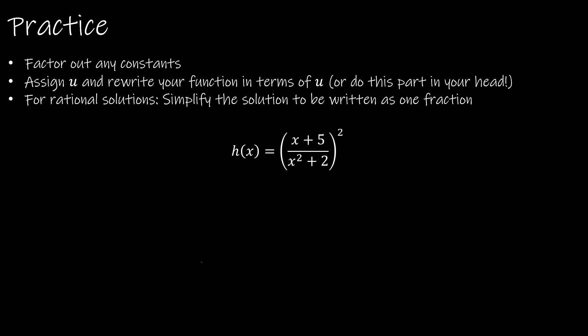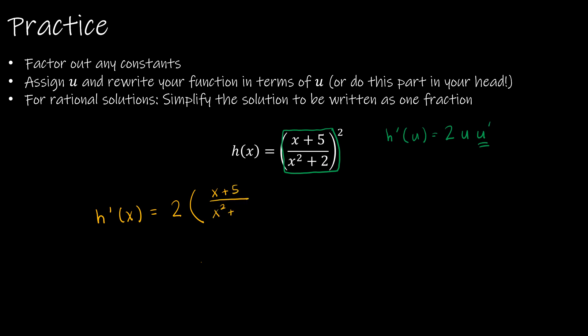Here's another practice. There are no constants to factor out. If I treat the entire expression (x plus 5) over (x squared plus 2) as u, then h prime of u will be 2u times u prime. The u prime will require the quotient rule since u is a rational function. So h prime of x equals 2 times (x plus 5) over (x squared plus 2) to the first power, times u prime.